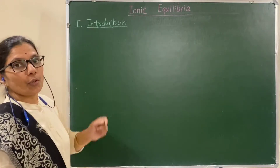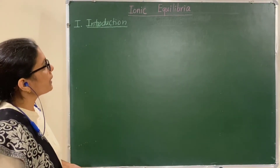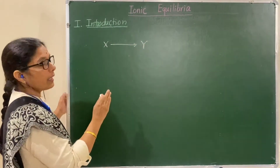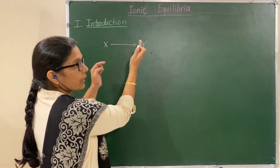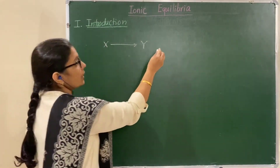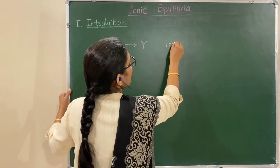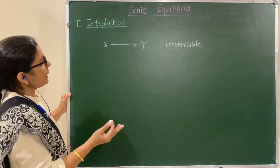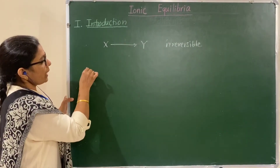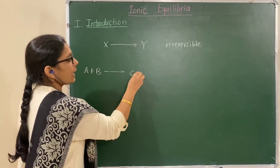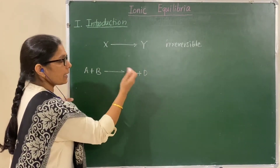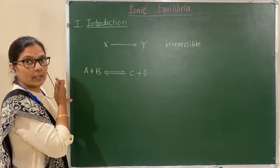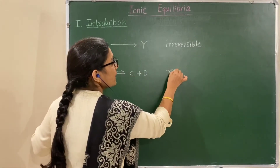Consider a reaction where X is completely converted into Y — the reaction takes place in only one direction, which is an irreversible reaction. Now consider another example where A reacts with B to form C and D, and again C and D react to form A and B — the forward reaction as well as backward reaction takes place, making it a reversible reaction.